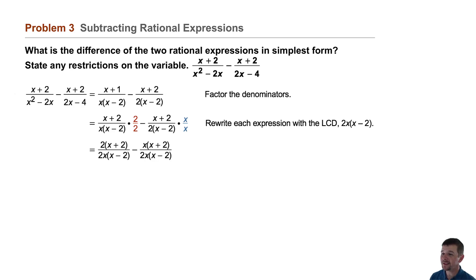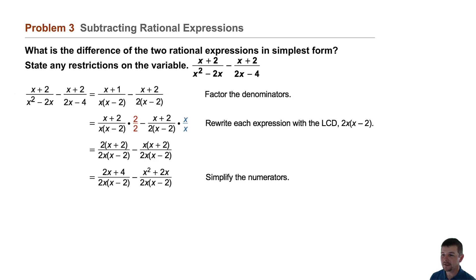Then we'll simplify the numerators. In this case, we get 2x plus 4 over 2x times x minus 2, minus x squared plus 2x over 2x times x minus 2.